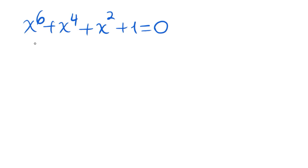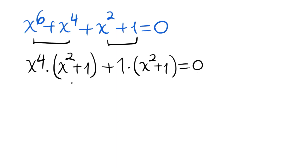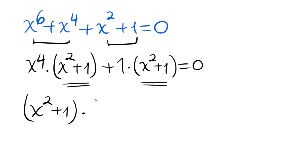Let me begin with grouping these two terms. Factor out x to the power 4 times x squared plus 1, and this is already x squared plus 1, so 1 times x squared plus 1 is equal to 0. Then we can factor out x squared plus 1 and write times x to the power 4 plus 1 is equal to 0.